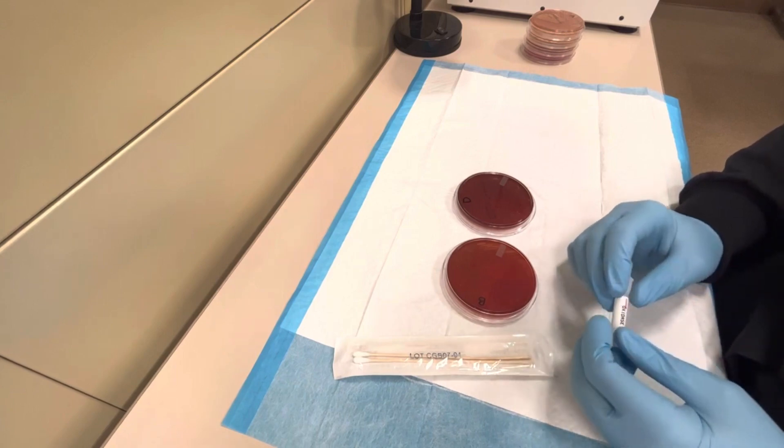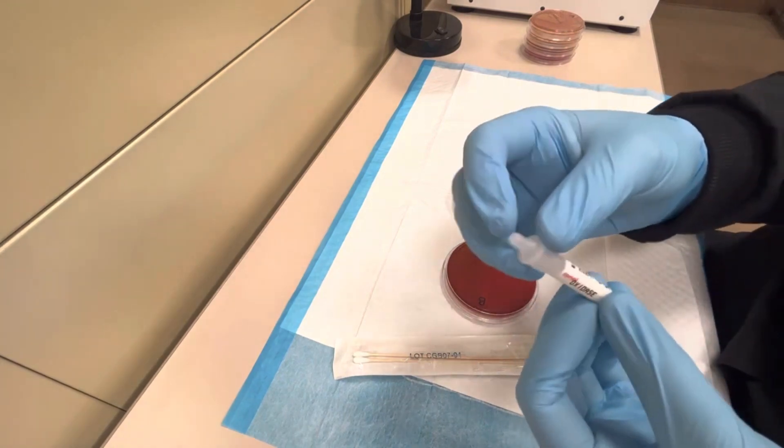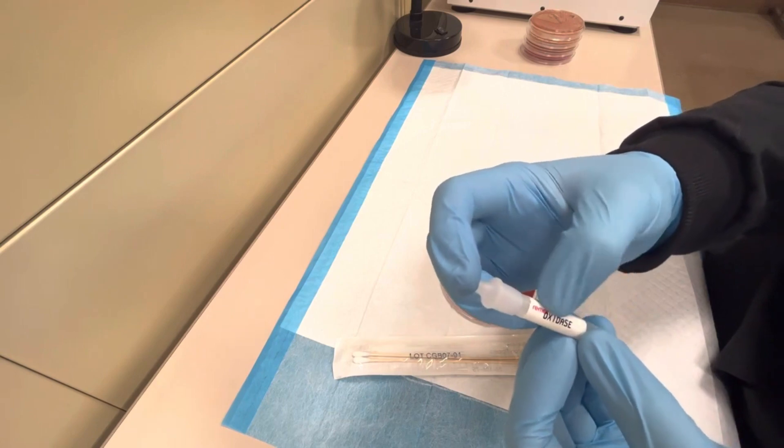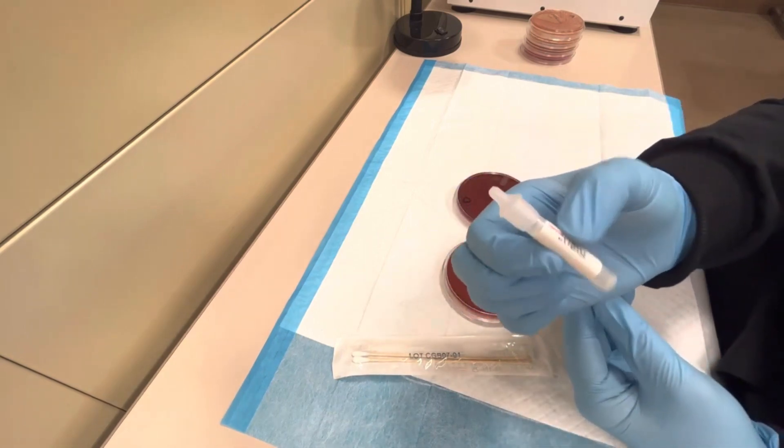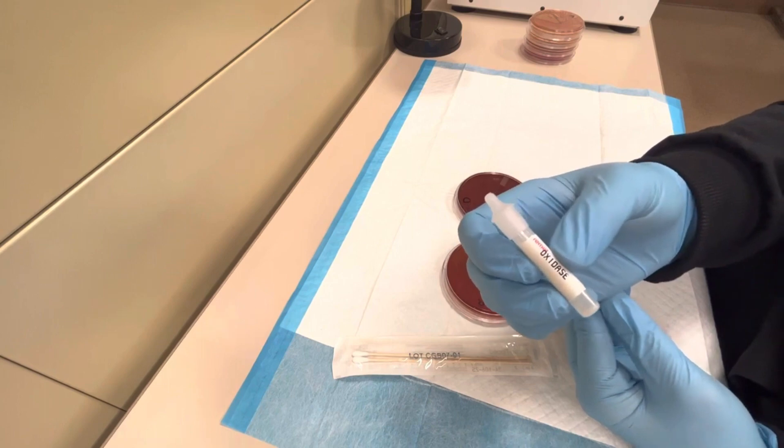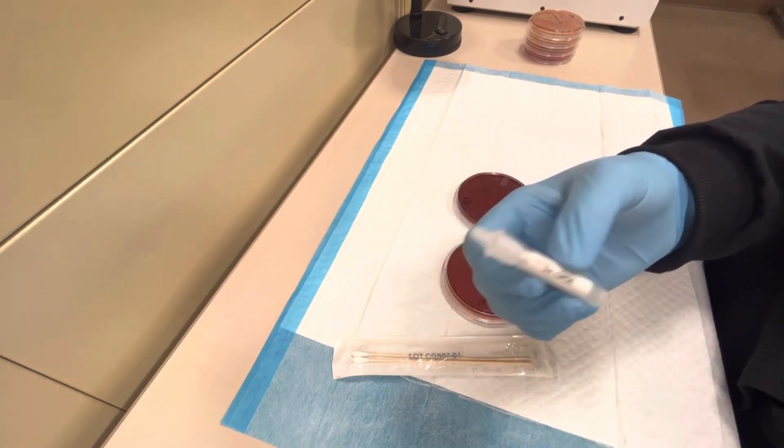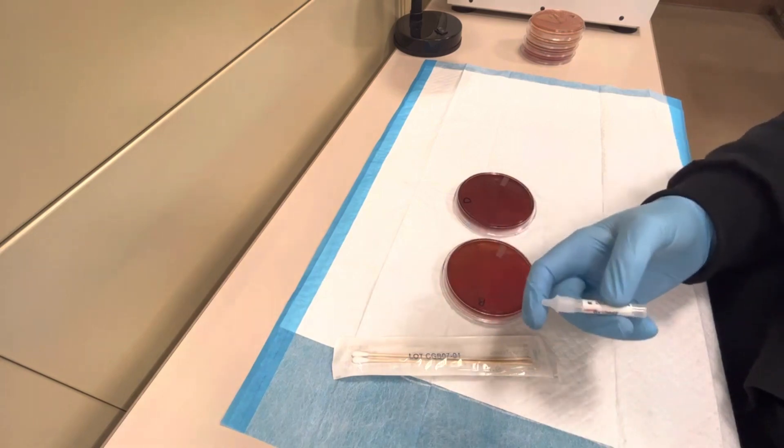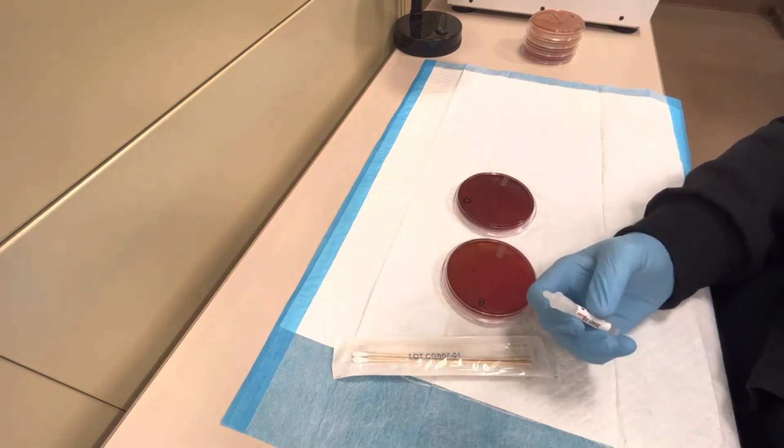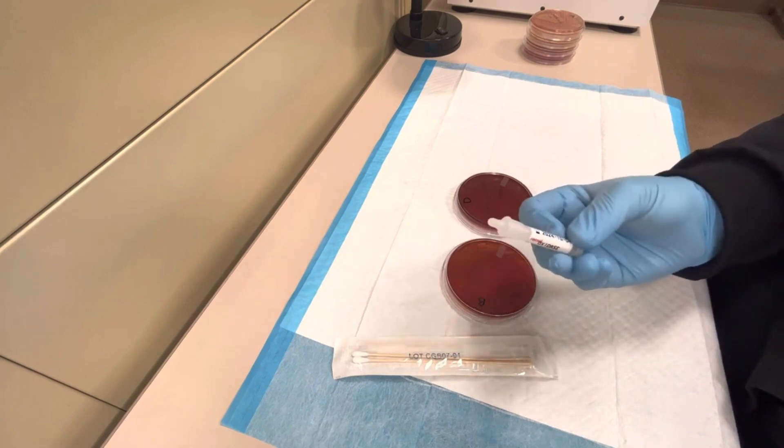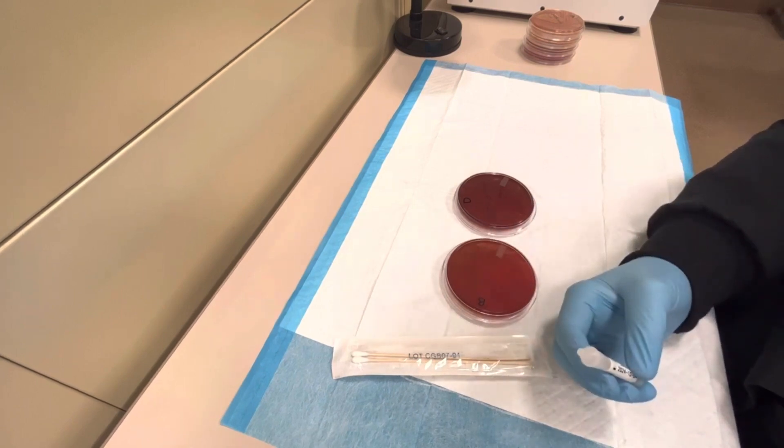The test reagent, located in these little vials, acts as an artificial electron acceptor for the oxidase enzyme. An organism that has the cytochrome C oxidase enzyme will turn a deep purple or blue color in the presence of this reagent. If this enzyme is not produced by the bacteria, no color change will occur.